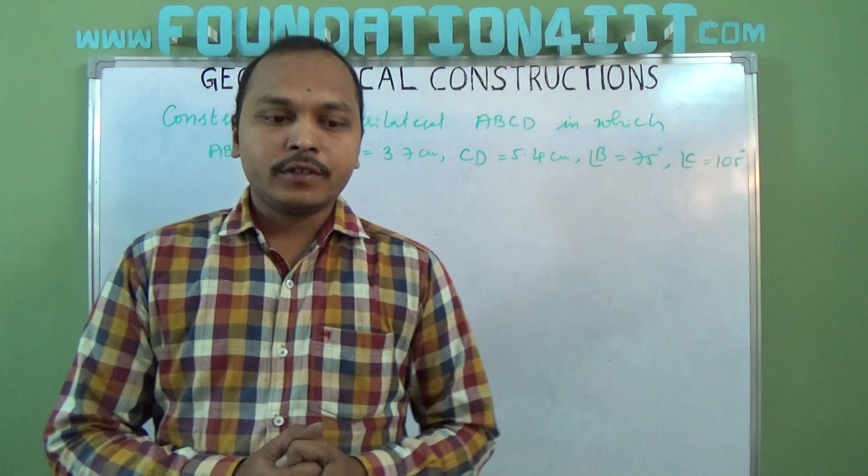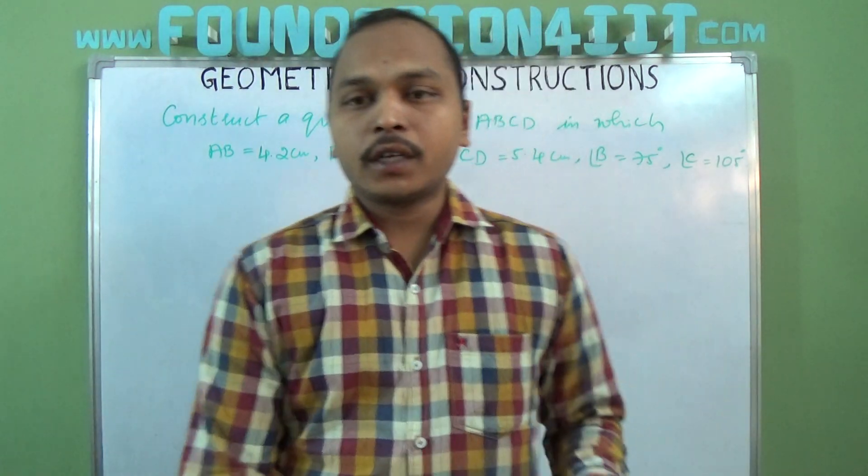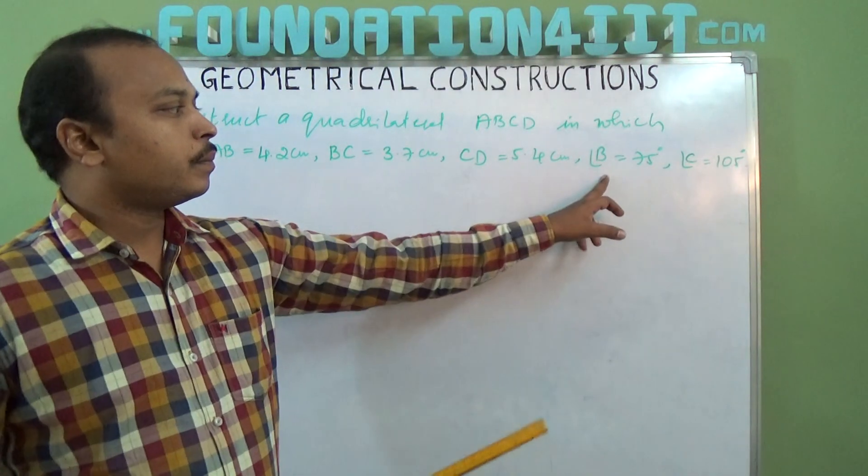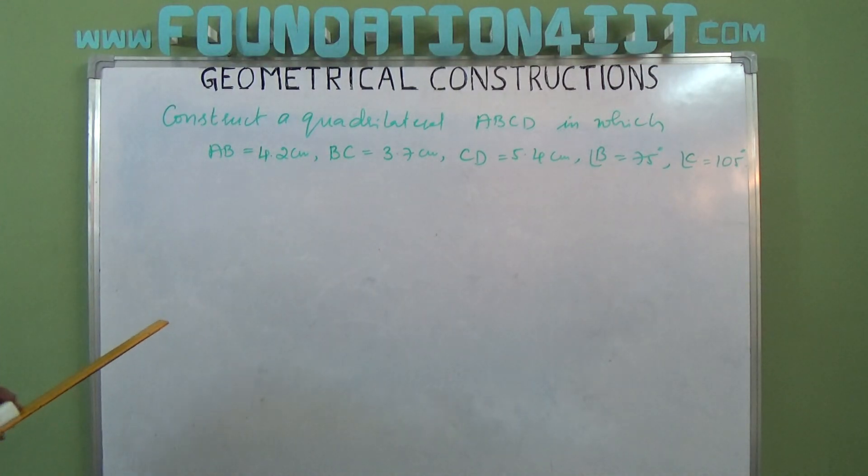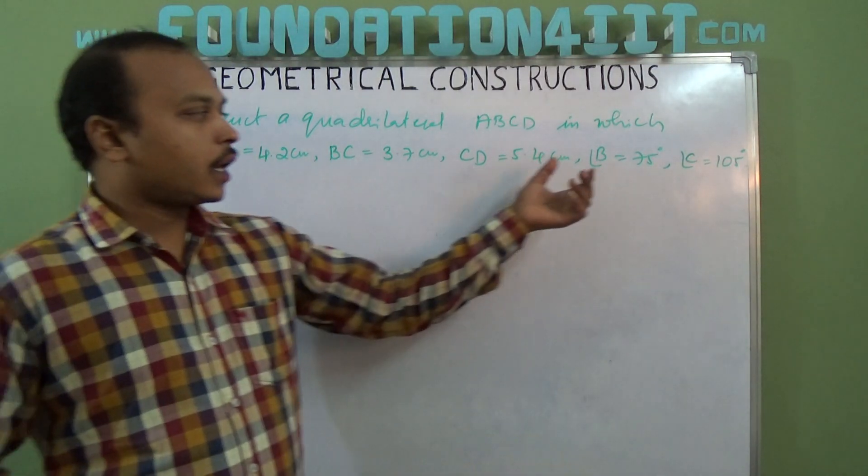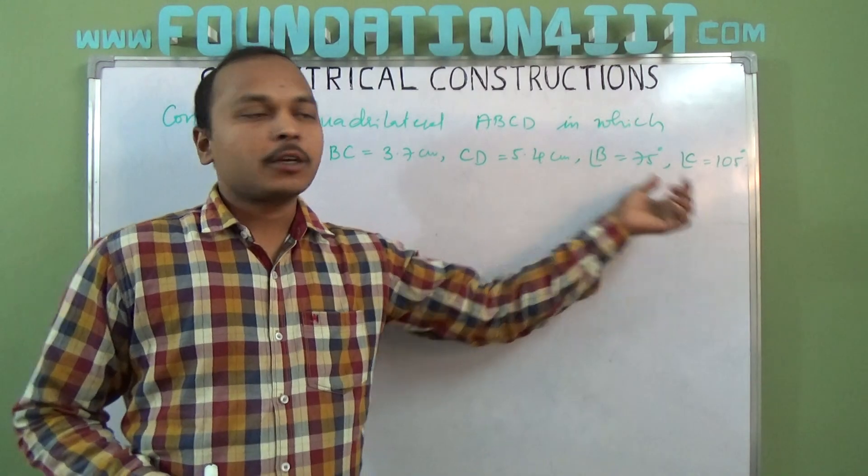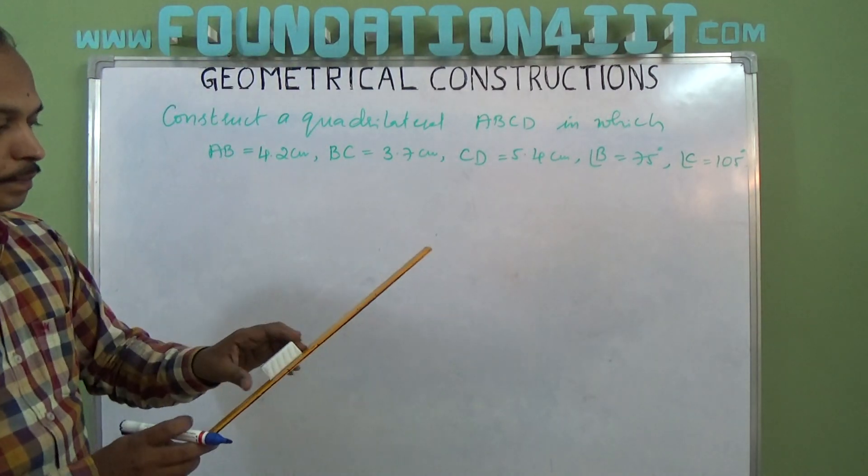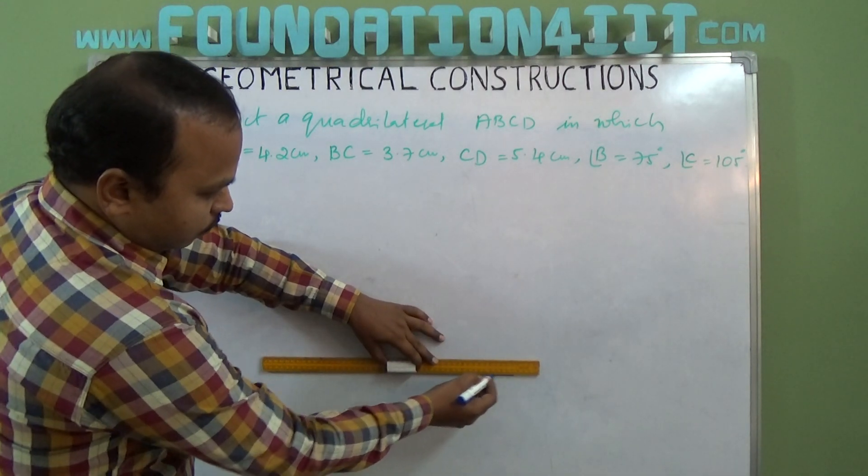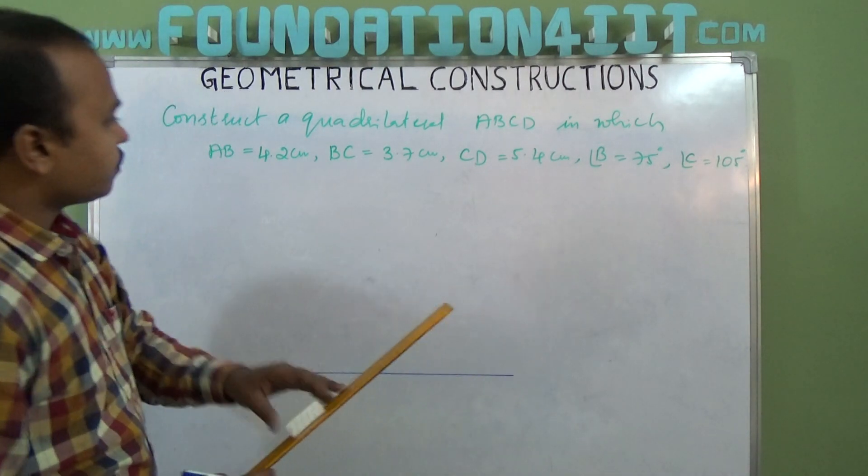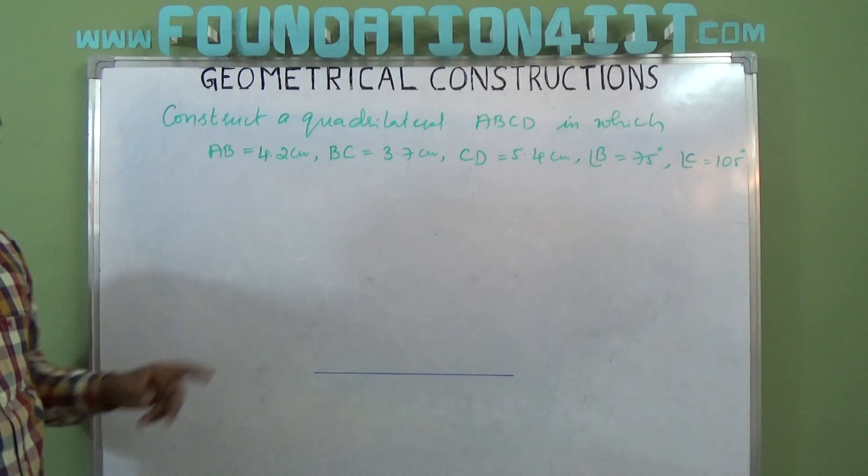First of all we will take the base. B and C are included angles so you can take any one of the sides, either with angle B or C. I am taking first AB. If you observe, A to B is 4.2 centimeters.